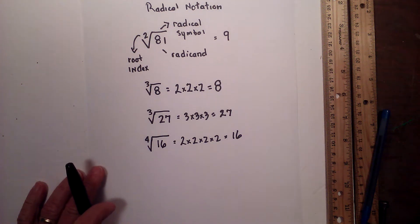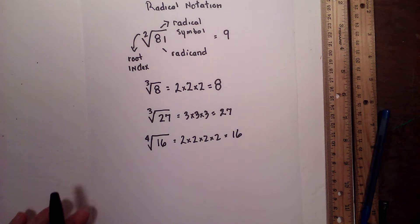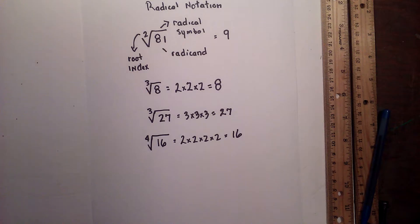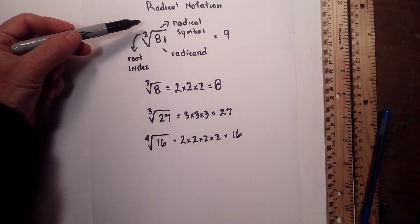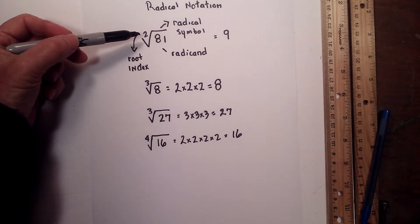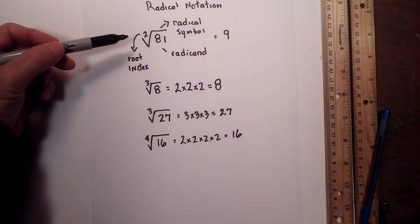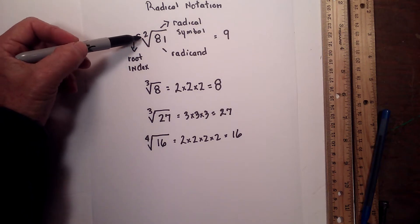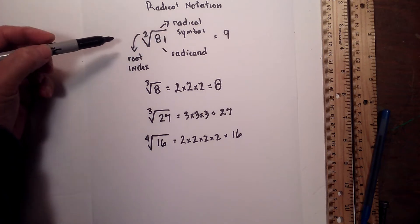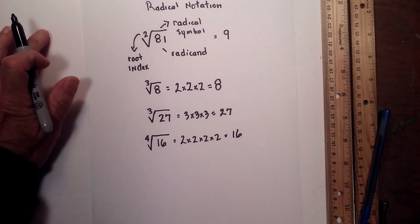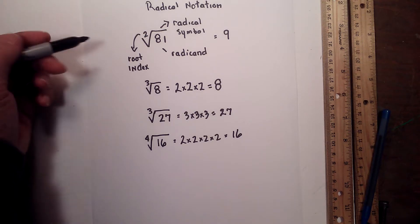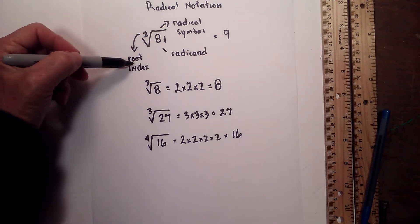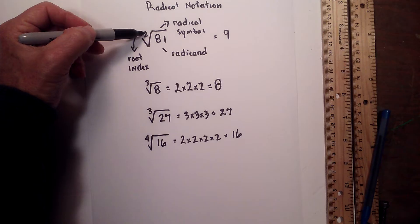In this video I'd like to talk about radical notation. To begin with, the symbol for radical — which means you're going to take a root of a number — is this symbol right here. Many times you think of this symbol as a square root only because the root index is 2.